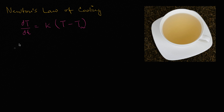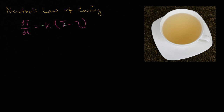Now if you don't like thinking in terms of a negative K, you could just put a negative right over here, and now you would have a positive K. It makes sense: if our object has a higher temperature than the ambient temperature — so this difference is positive — then our rate of change will be negative; we'll be getting cooler. If our object's temperature is cooler than the ambient temperature, this difference is negative, but the negative of that is positive, so our temperature will be increasing.